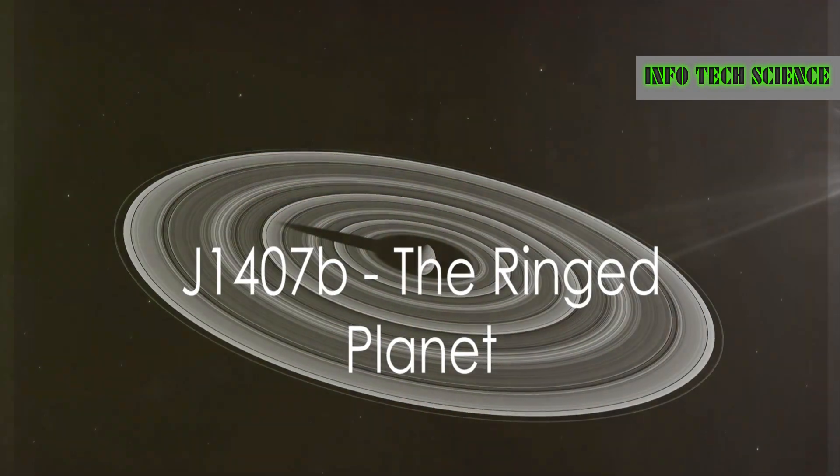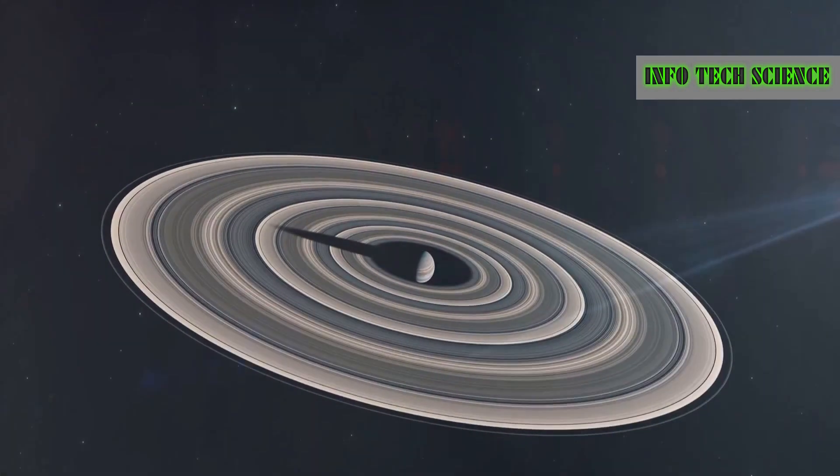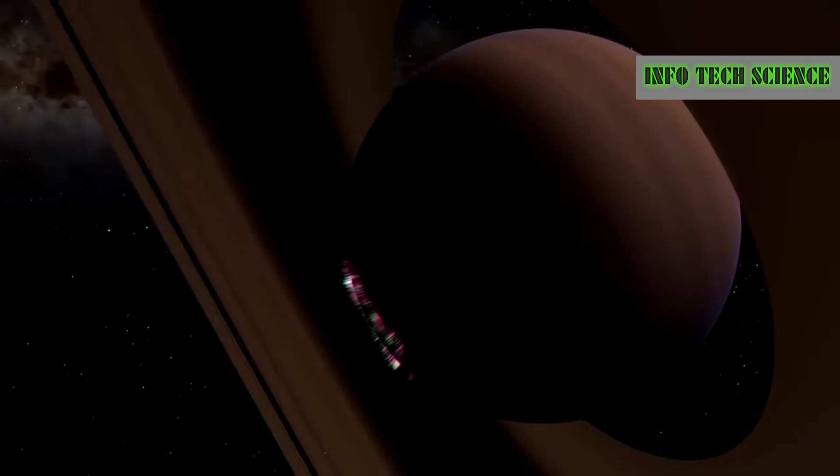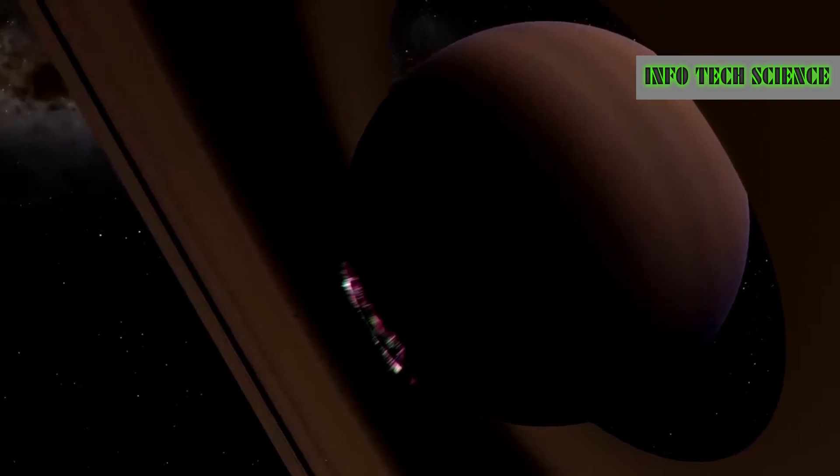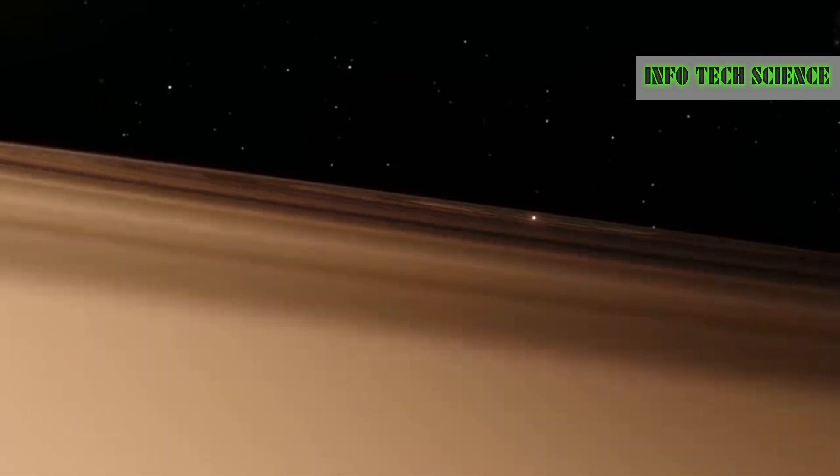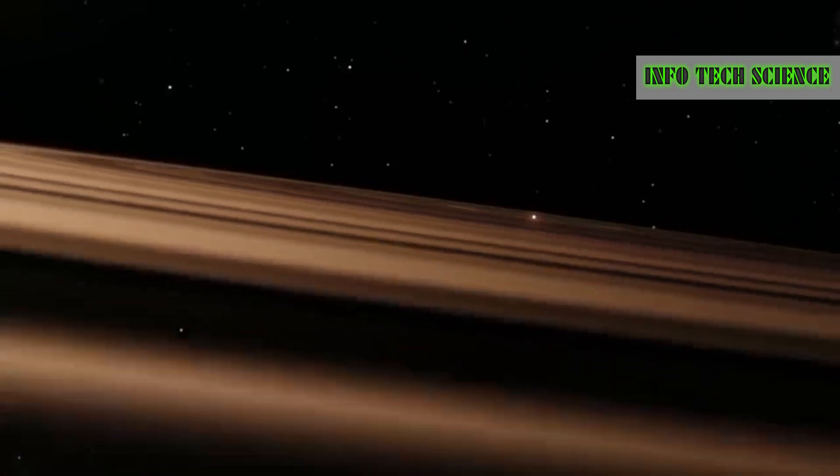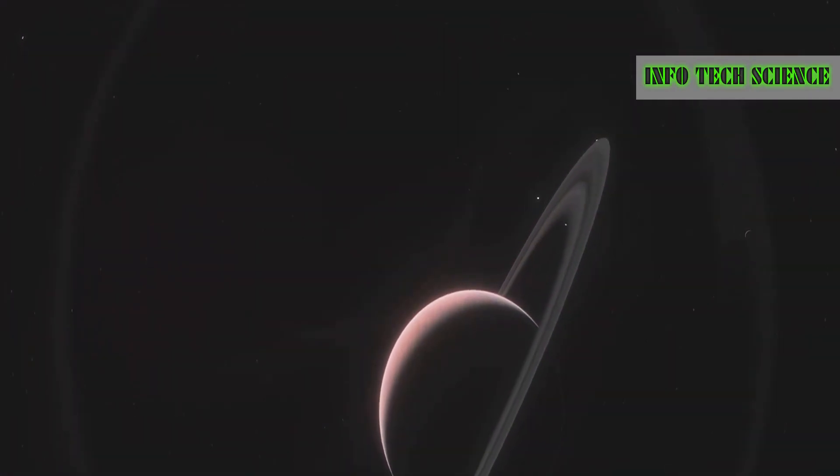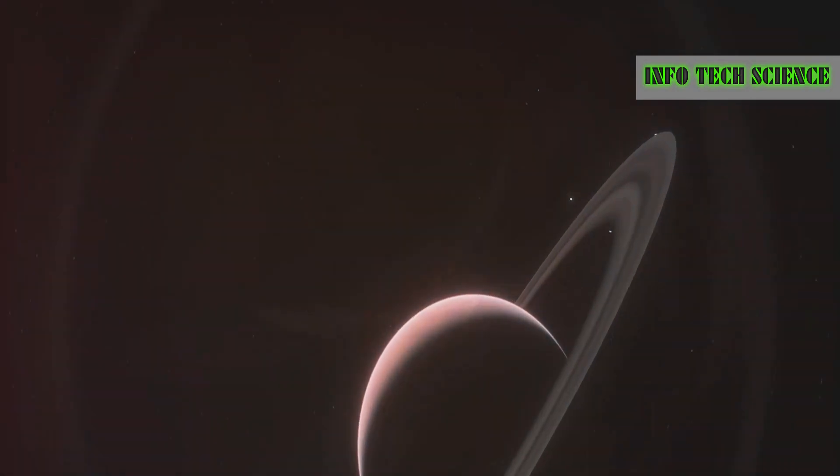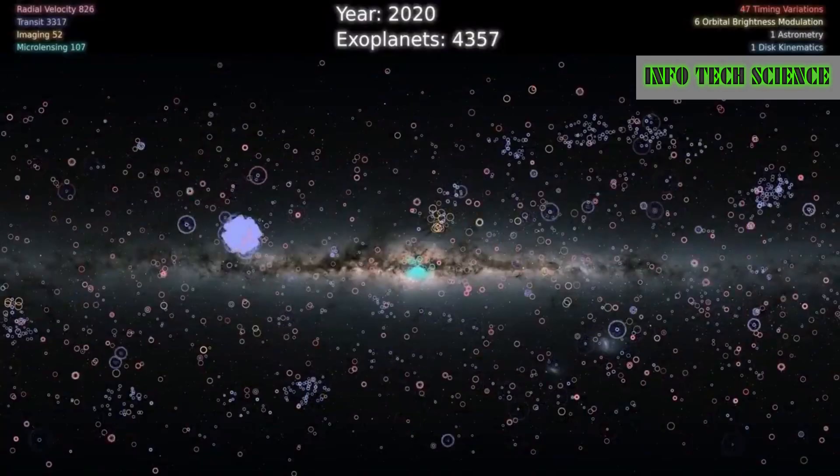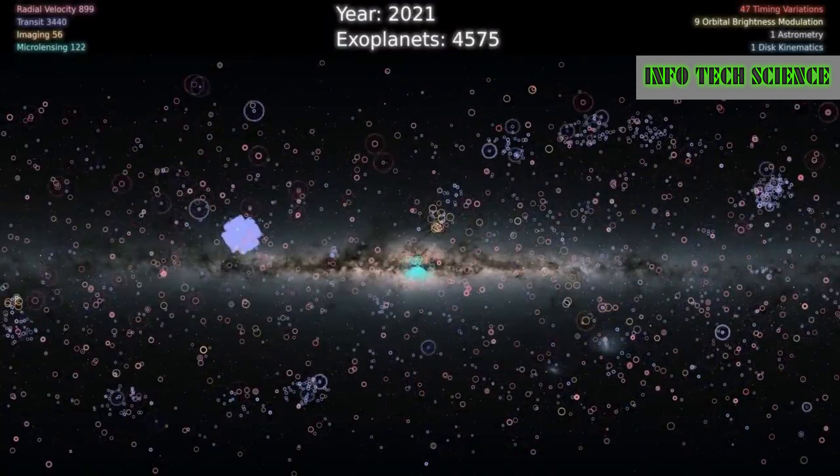J1407b, 400 light years away, is an ordinary planet but has a gigantic ring system around itself. The radius of its biggest ring is 90 million kilometers, compared to Saturn's largest ring which is 480,000 kilometers. If J1407b were in our solar system, we would see its rings in the sky instead of clouds. However, this causes inconvenience to its own star, blocking out the light source for 56 days.